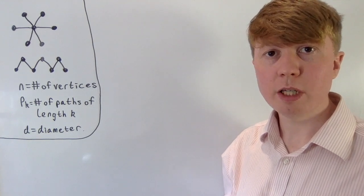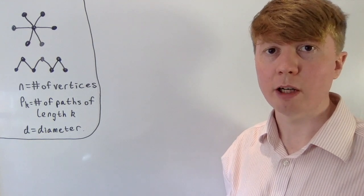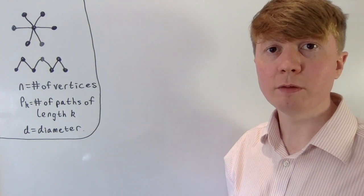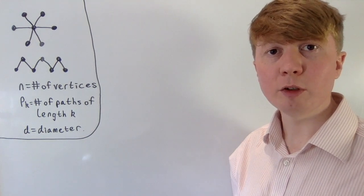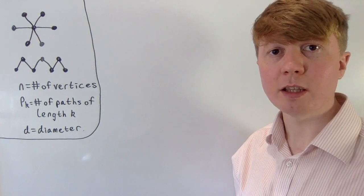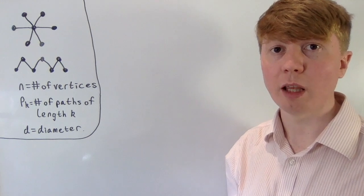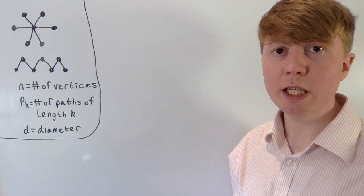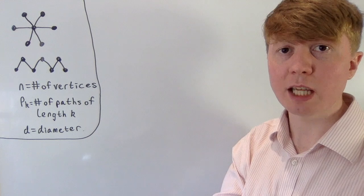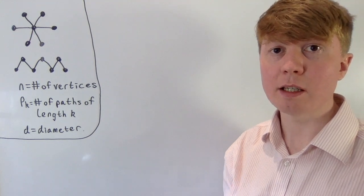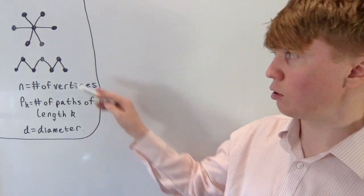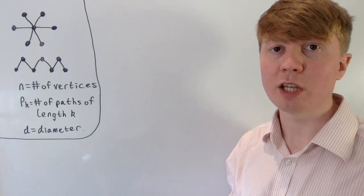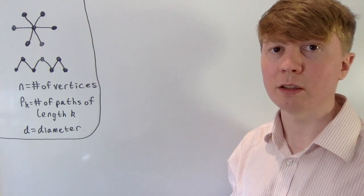We're going to explore some properties of trees in graph theory. We're interested in the relationship between the number of vertices of our tree, the number of paths of a certain length, and also the diameter of our tree. A tree is a graph which is connected and doesn't contain any cycles — you can't go from one vertex back to itself along different edges without retracing your steps.